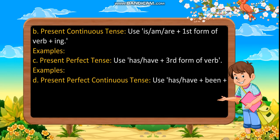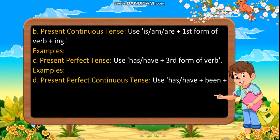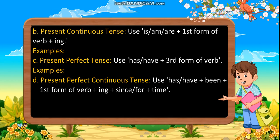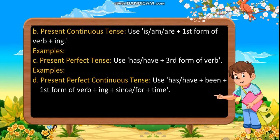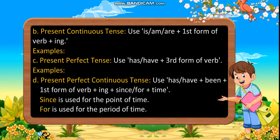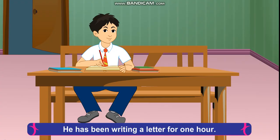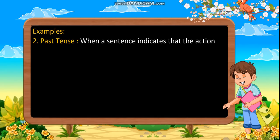Present perfect continuous tense: Use has or have plus been plus the first form of verb plus I, N, G, plus since or for plus time. Since is used for the point of time; for is used for the period of time. Examples: He has been writing a letter for one hour. They have been practicing music since two o'clock.